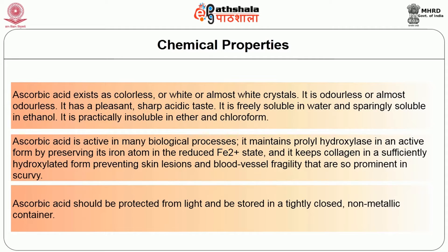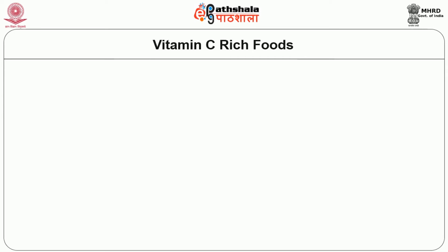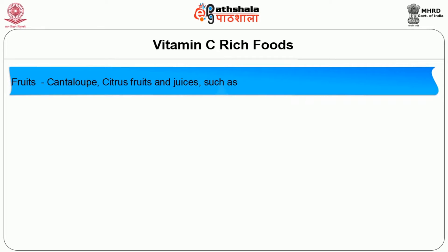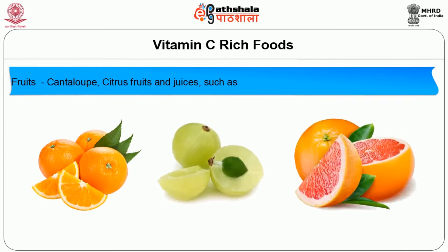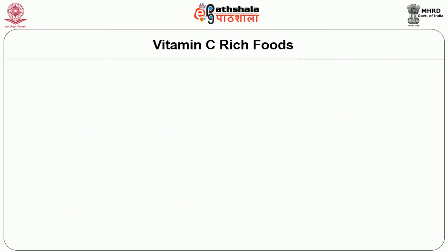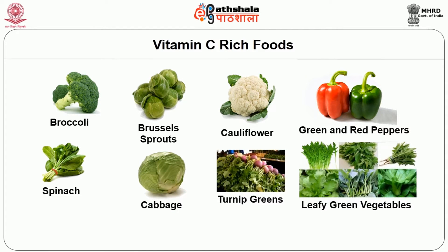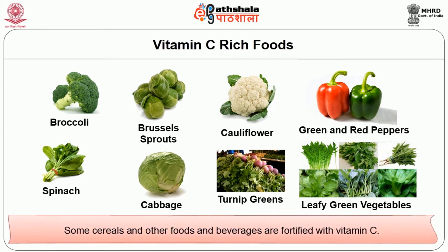Now let us learn about vitamin C-rich foods. Fruits are the best sources — fruits such as cantaloupe, citrus fruits and juices like orange, amla and grapefruit are good sources. In the vegetable family, broccoli, Brussels sprouts, cauliflower, green and red peppers, spinach, cabbage, turnip greens and other leafy greens are good sources. Some cereals, fruits and other foods and beverages are now also fortified with vitamin C.